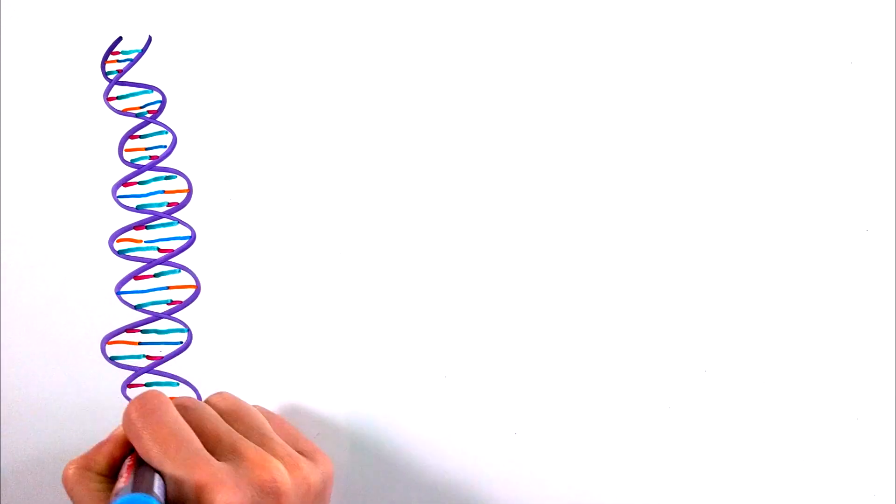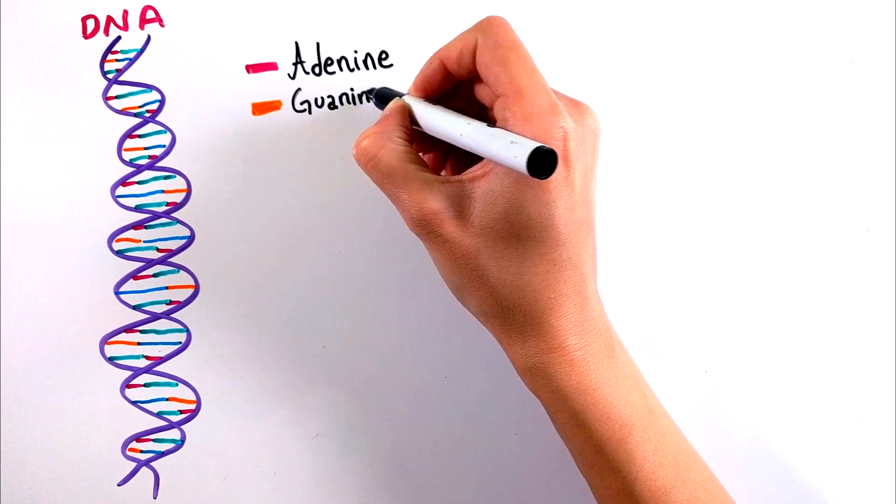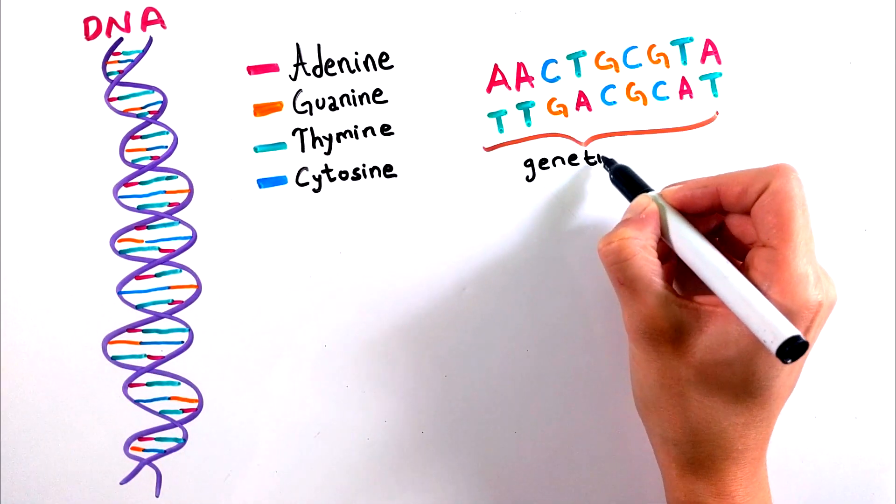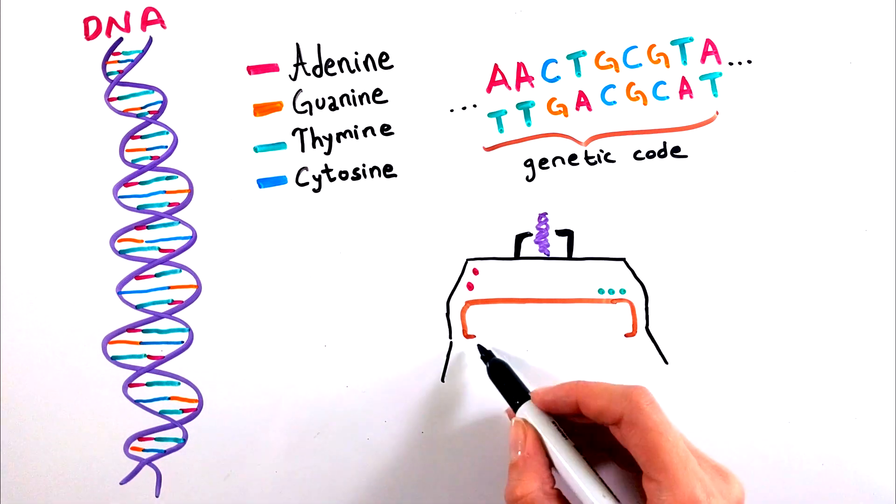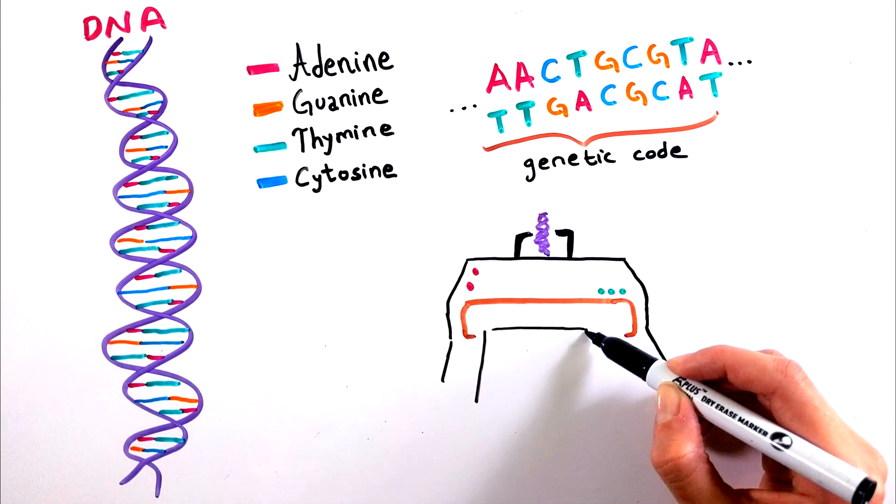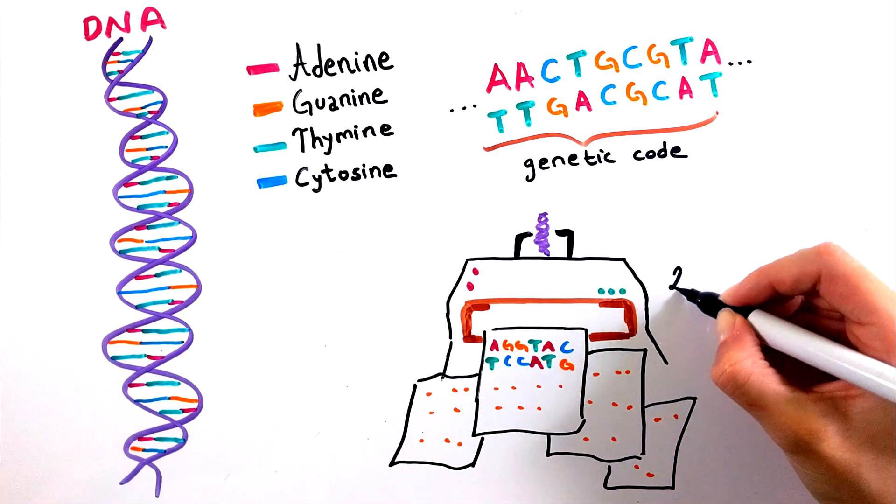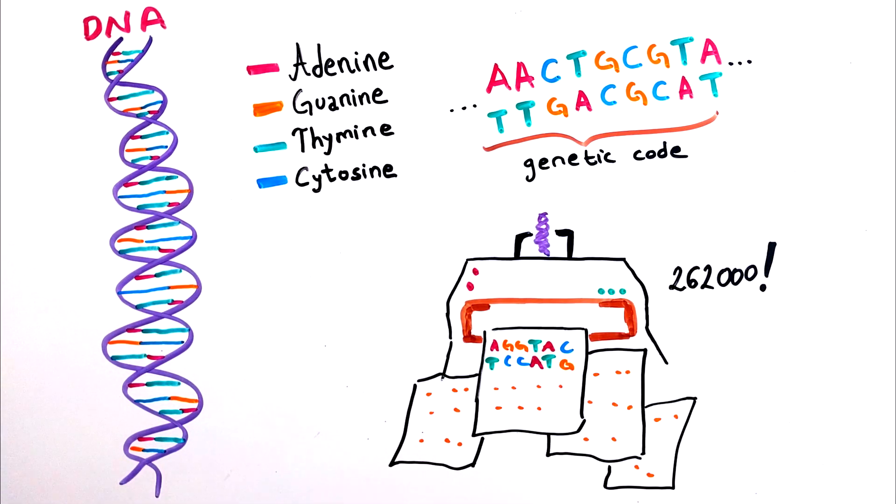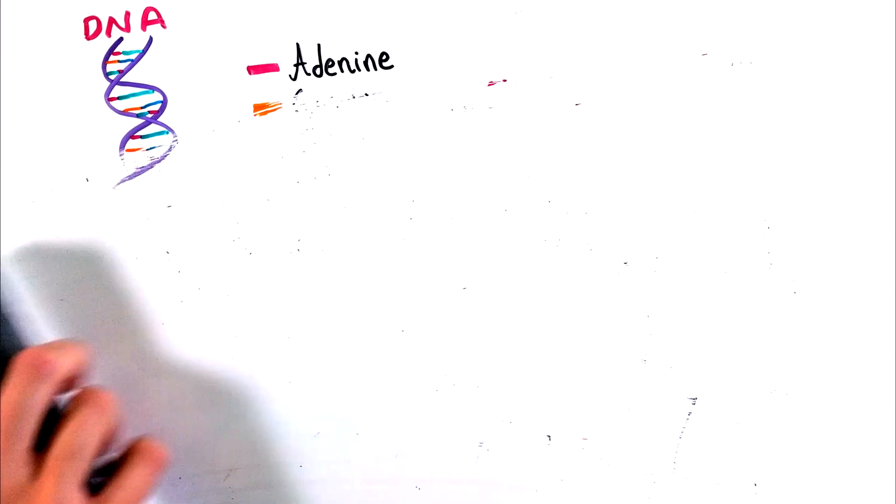It is made of chemical building blocks called bases, and there are four of them: adenine, guanine, cytosine, and thymine. Combinations of these letters make up the genetic code, and if we were to print our entire DNA sequence letter by letter, it would fill 262,000 pages.